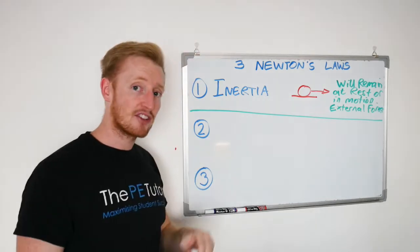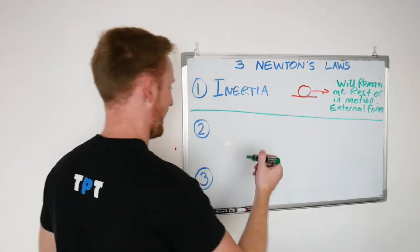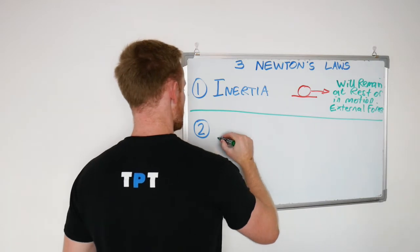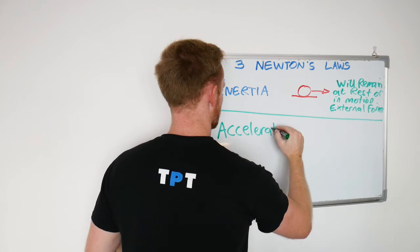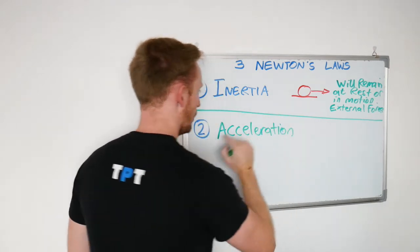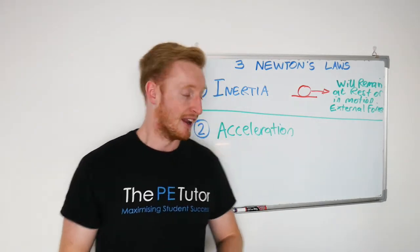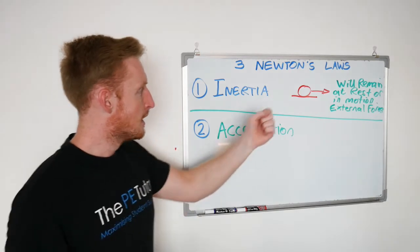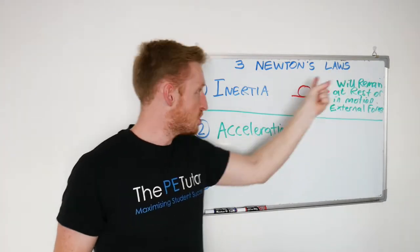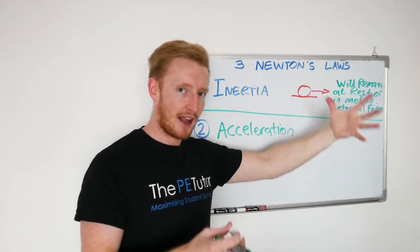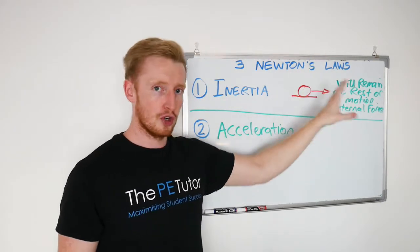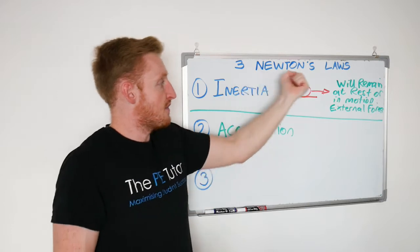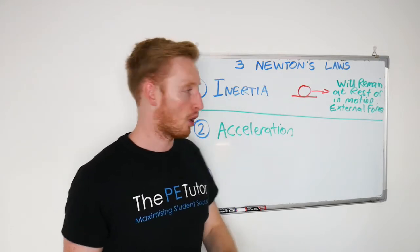Now when an external force does act upon it, we come to law two, which is the law of acceleration. Now what this says is the rate of change in motion when something acts upon that body is equivalent to or is proportionate to the size of the external force that's applied to it.